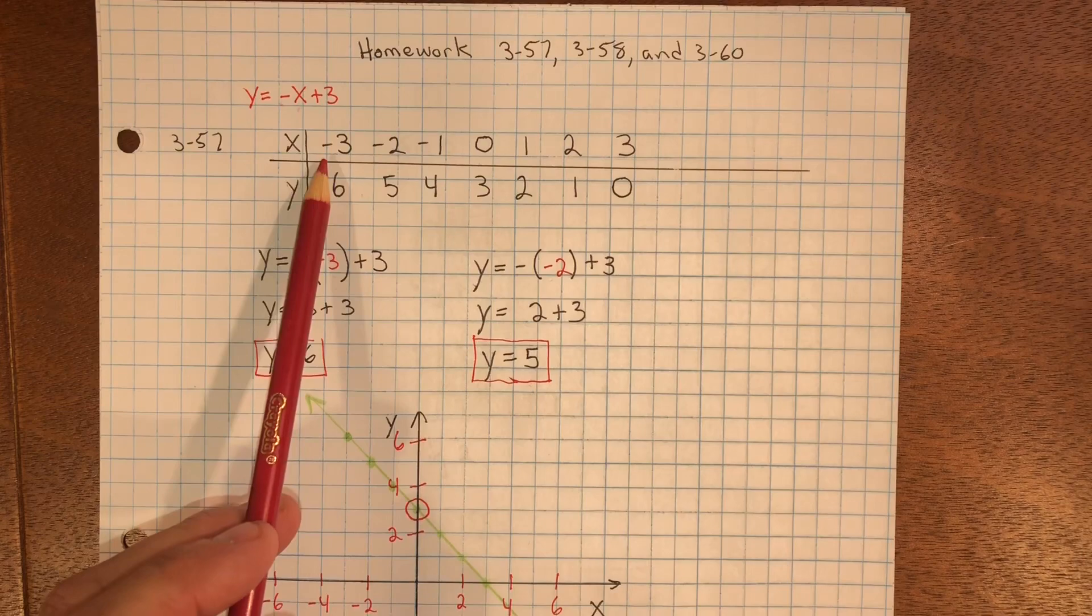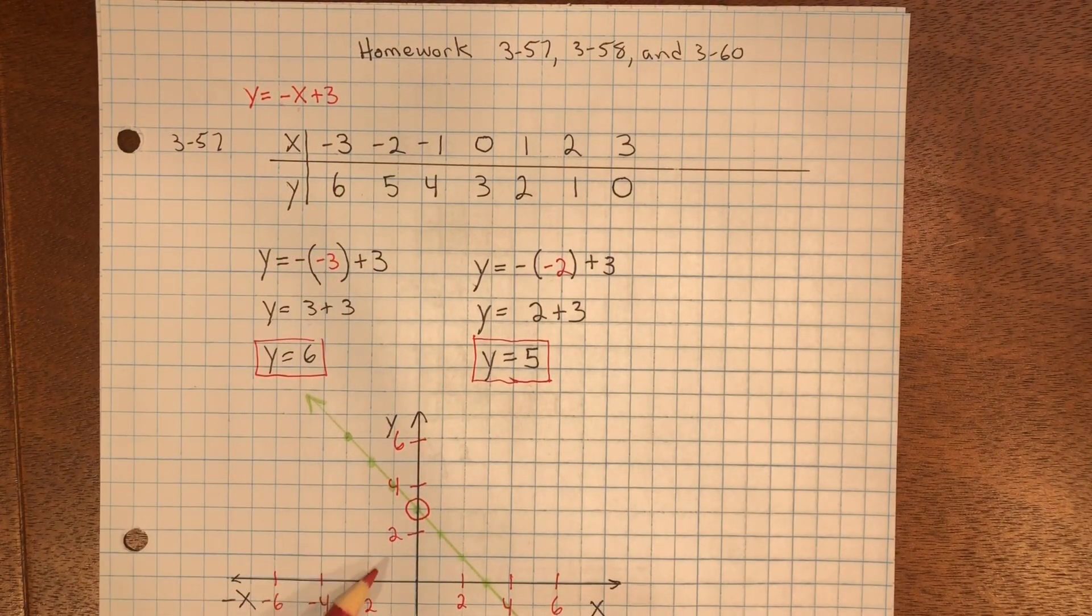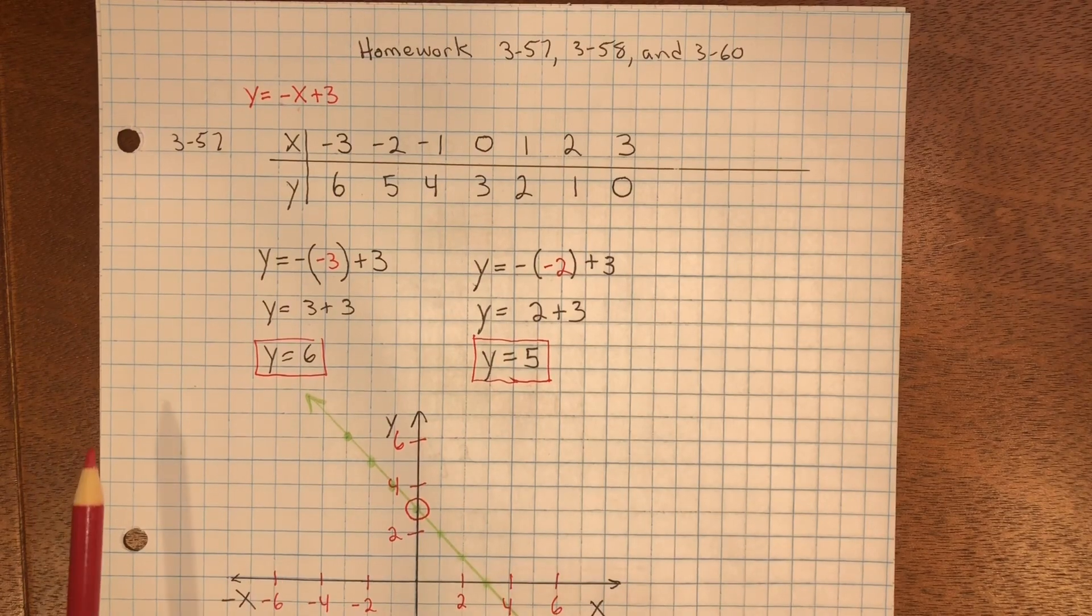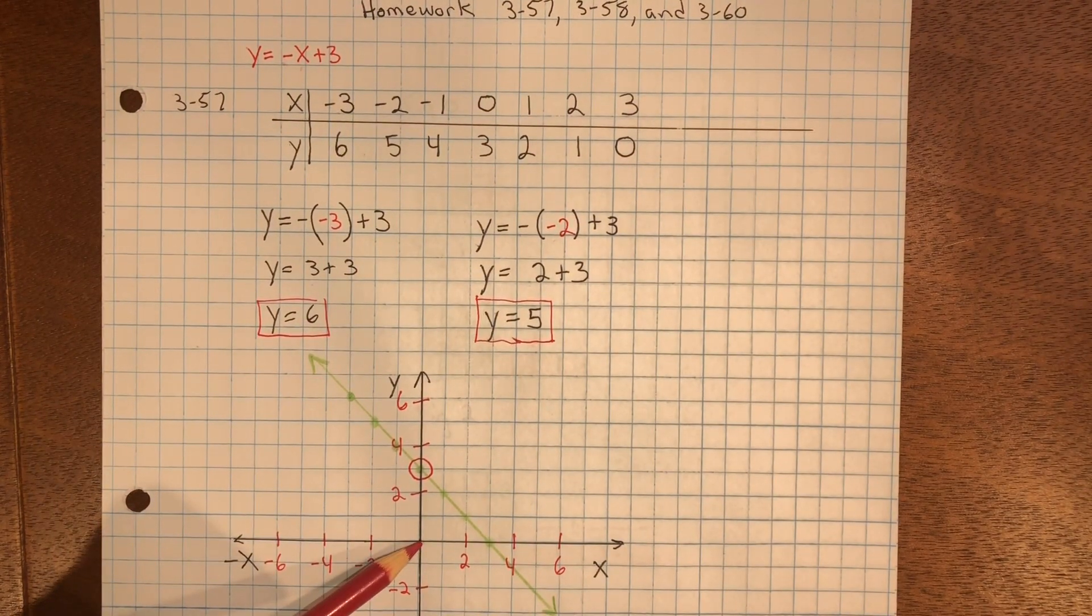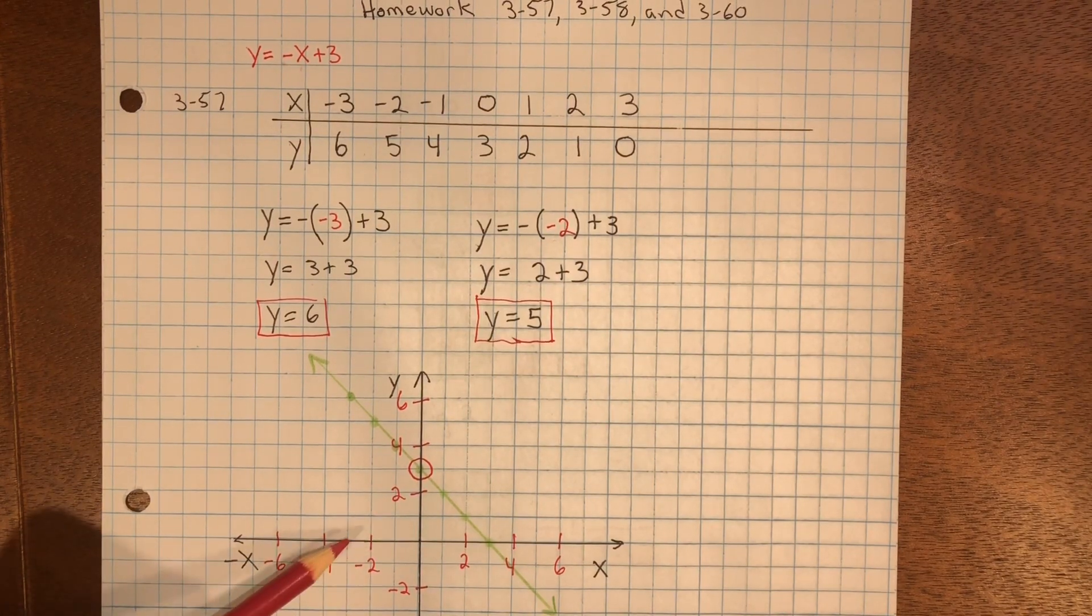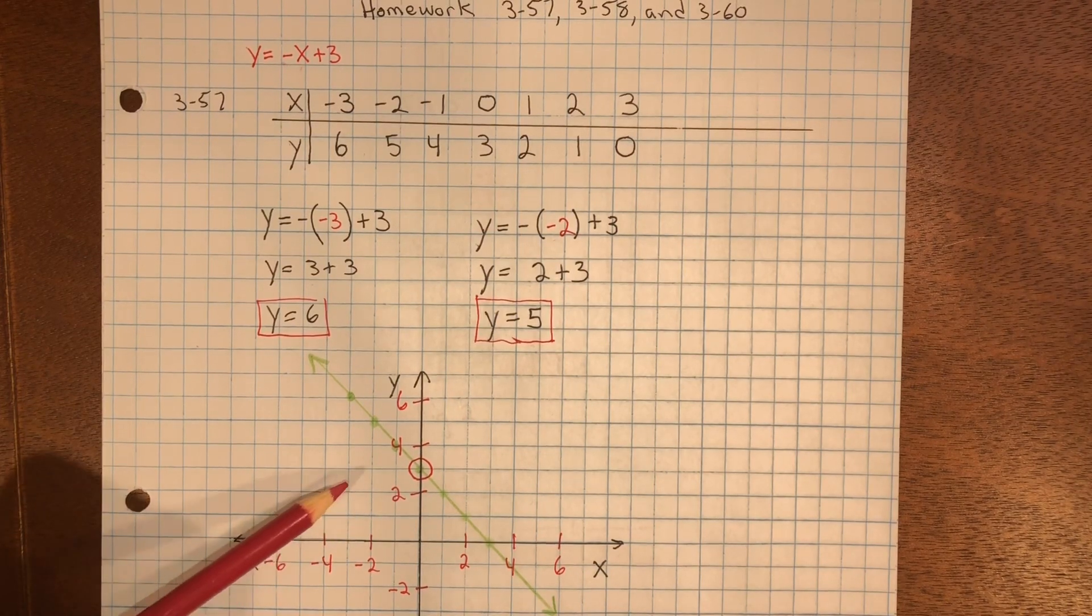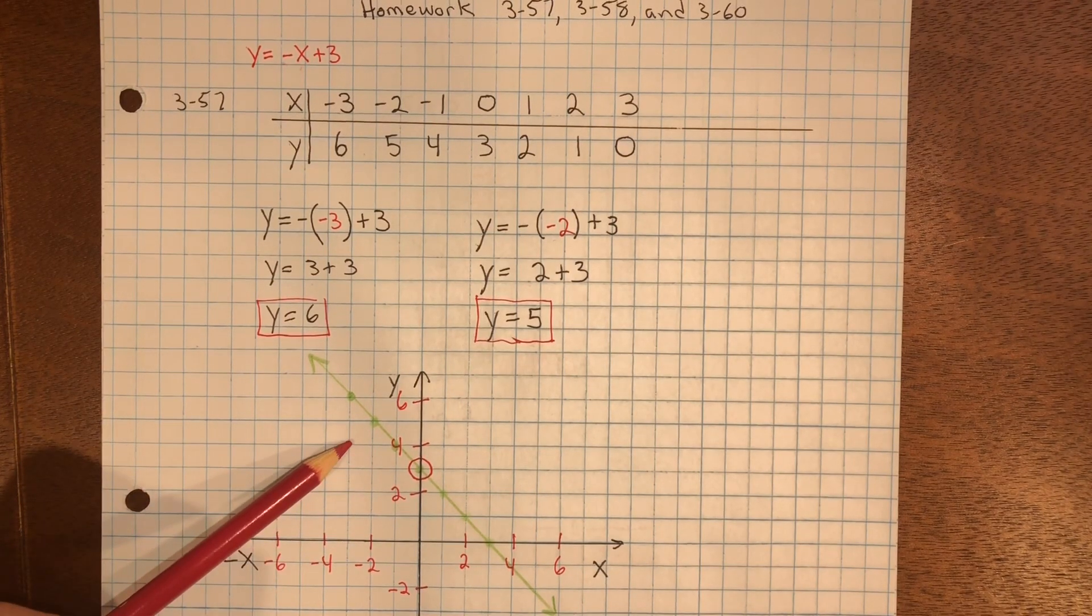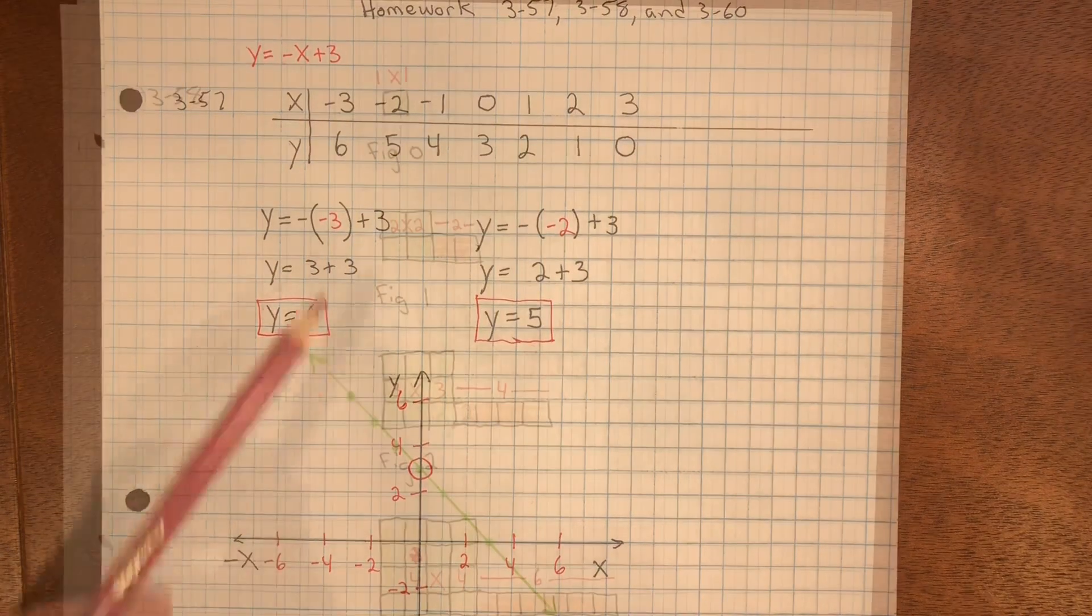Now that I have several inputs and outputs, I'll go ahead and plot them. Always start at the origin. Negative 3 on the x: negative 1, negative 2, negative 3. Positive 6 on the y: 1, 2, 3, 4, 5, 6. And I'd go ahead and plot the rest.